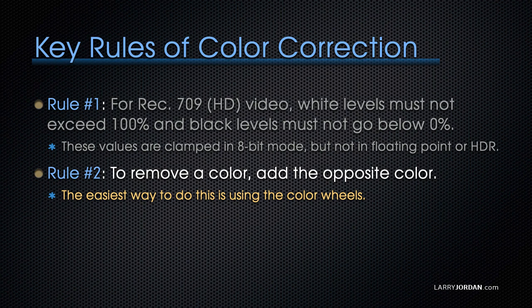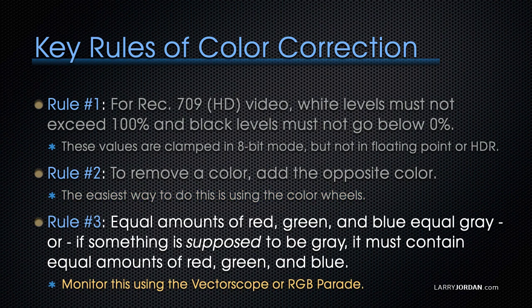It's very easy to find out what the opposites are using the color wheels. And Rule 3: equal amounts of red, green, and blue equal gray — it's called additive colors. Which is a fine thing to say, and it sounds great at a trivia party, but it doesn't really help us a whole lot. Where the help comes in is when we flip it around: if something is supposed to be gray, it must contain equal amounts of red, green, and blue.